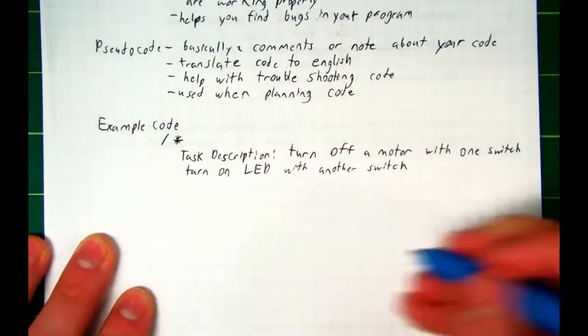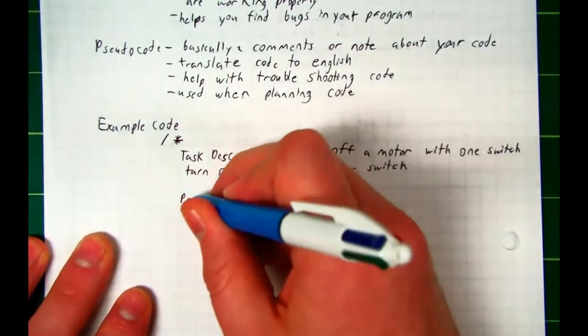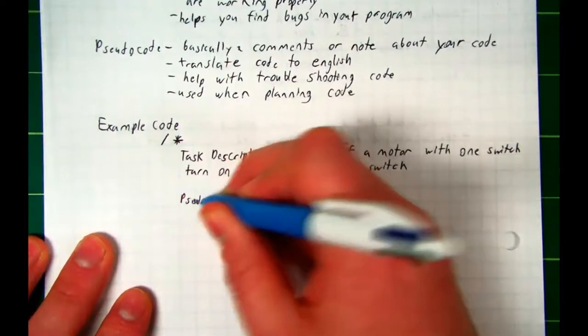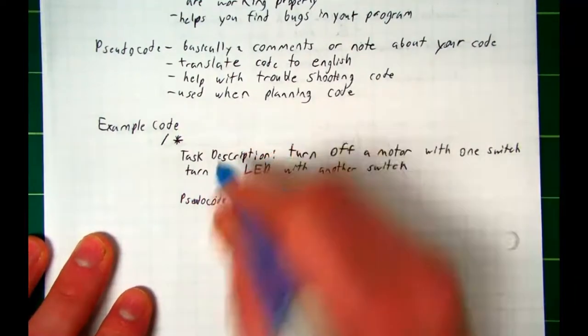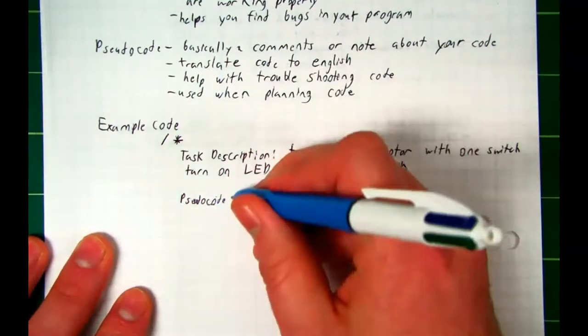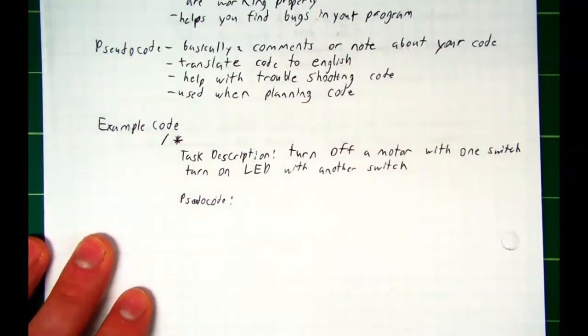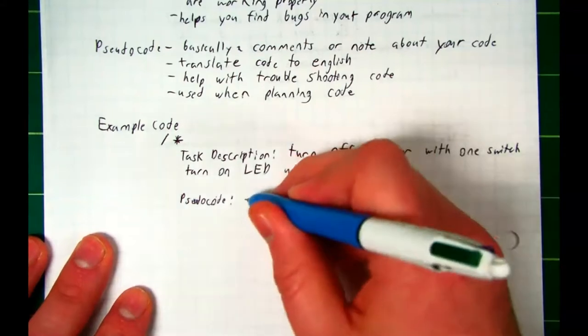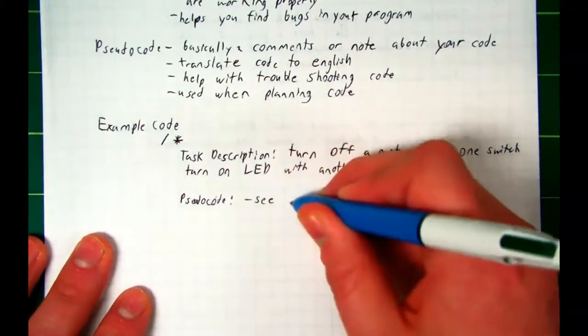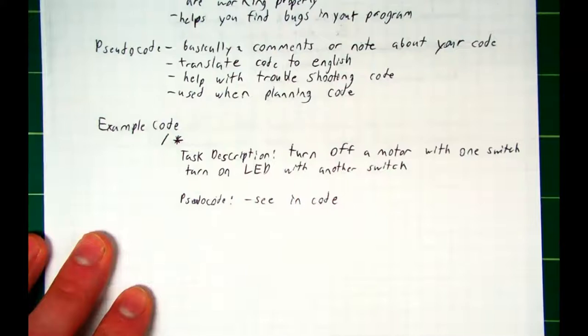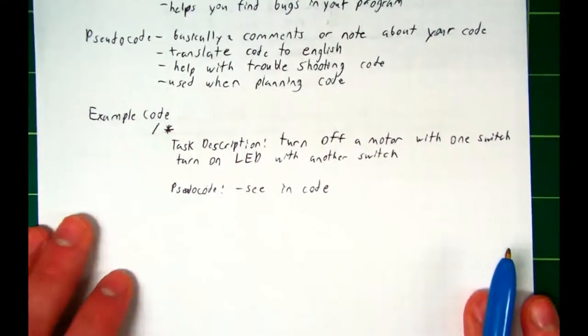Underneath your task description, you'll see your pseudocode. It'll be already written for you, just like the word task description is. You just put a little semicolon there, or colon, or maybe it's a dash. But for now, we're just going to make a note and say, see this in code. So we'll write our pseudocode for ourselves in our code. Just a little note for ourselves.